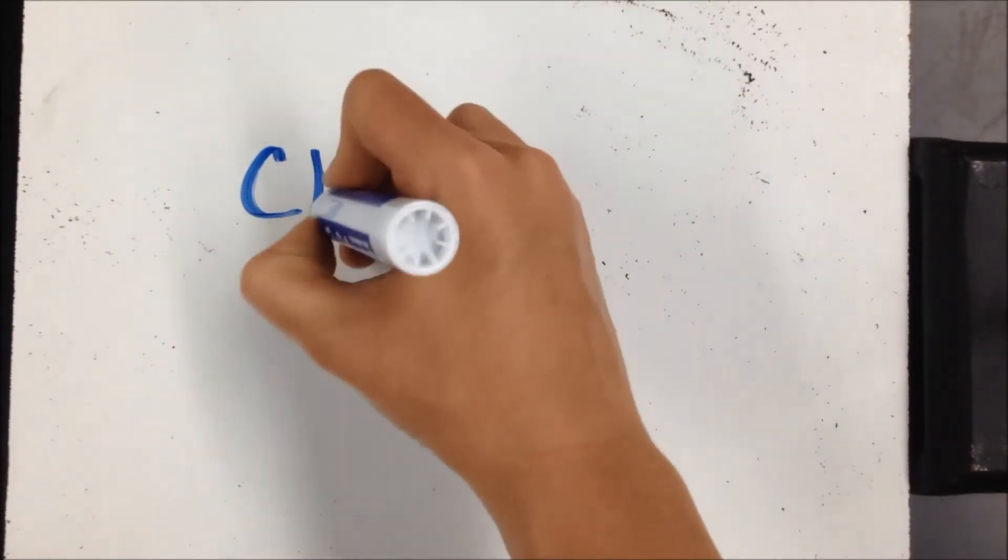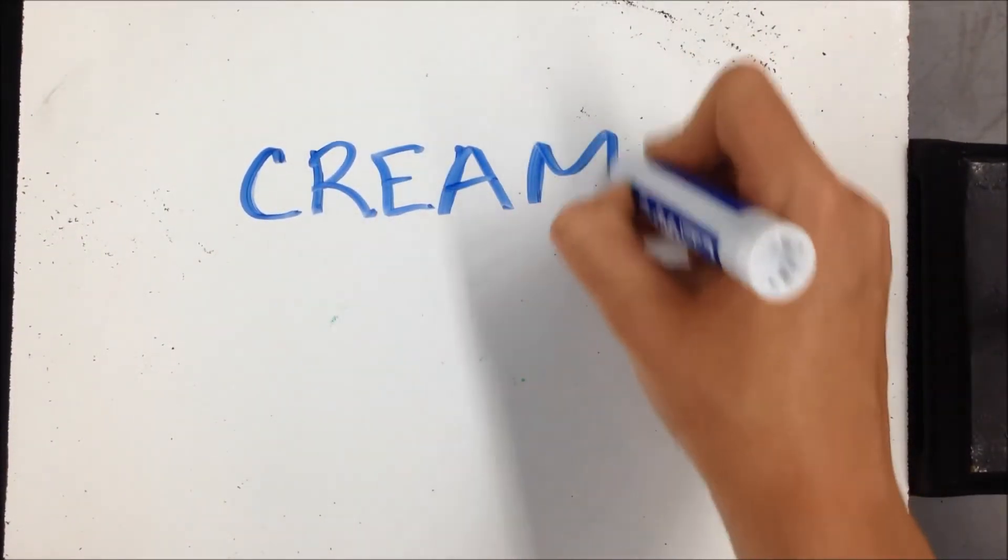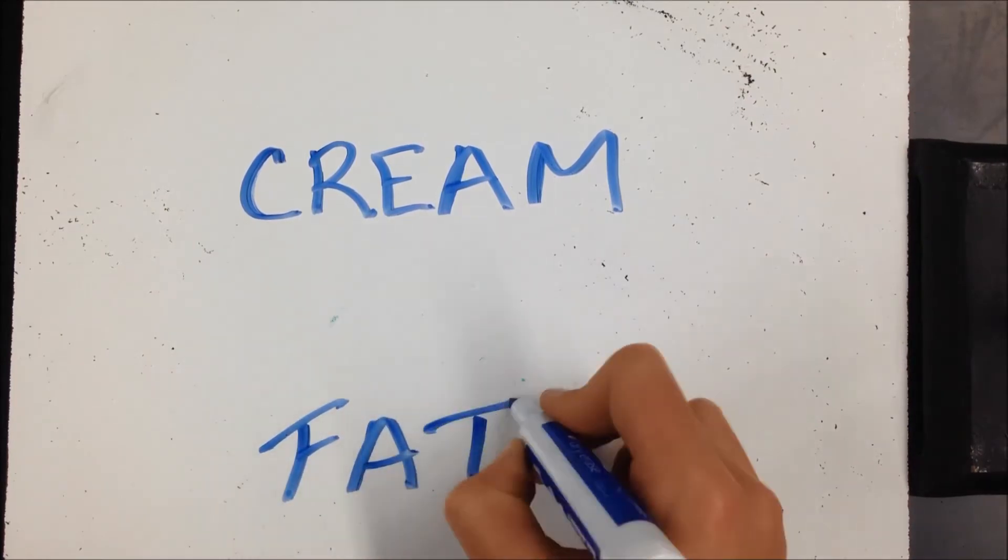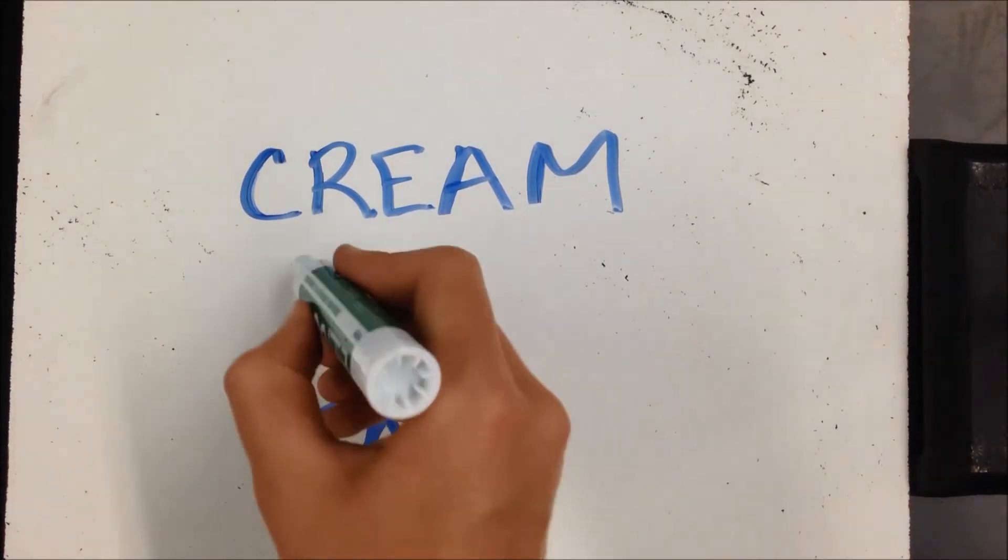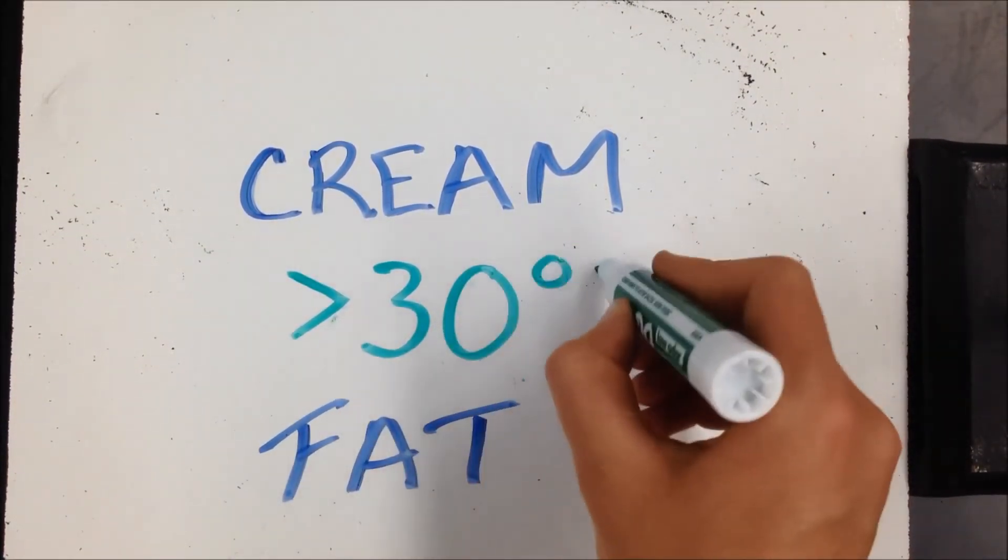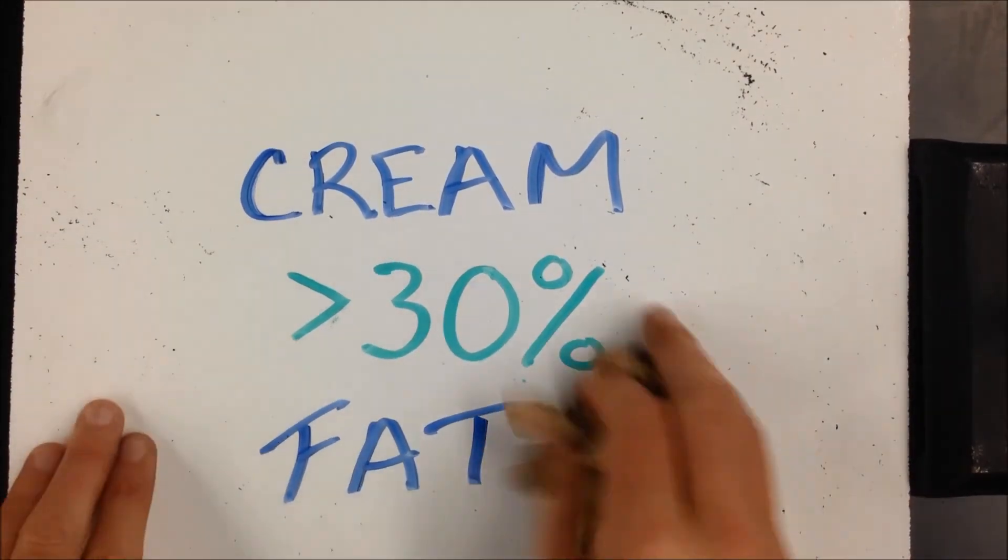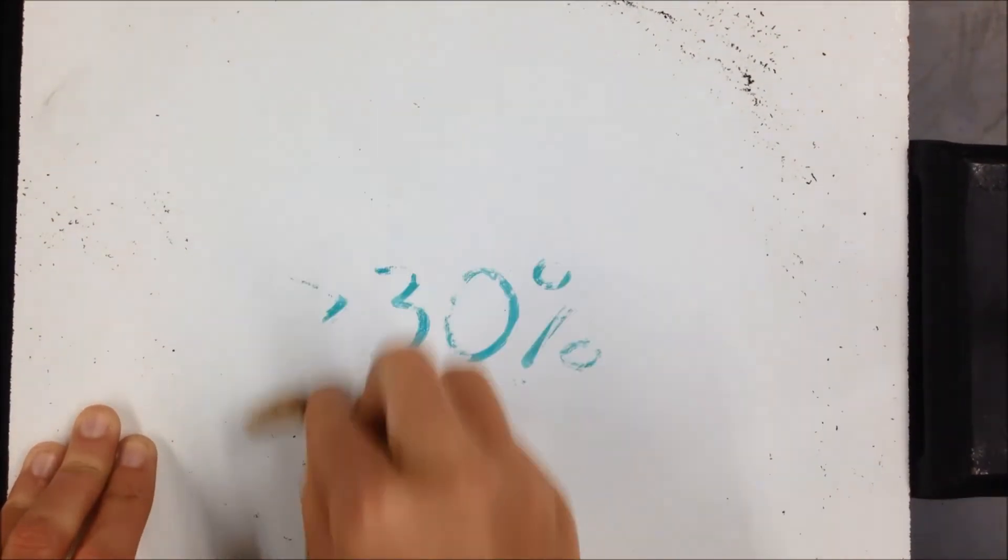In order for cream to be whipped, it needs a 30% or higher fat content. If there is less fat, there will not be a noticeable difference in texture when the fat globules are broken apart and the triglycerides bond together.